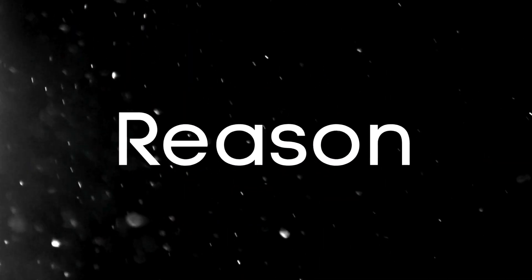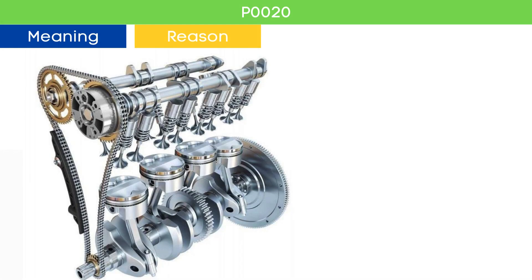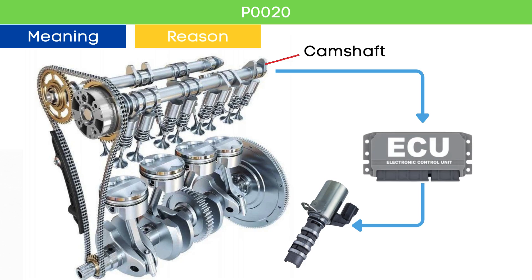Now let's learn why P0020 was triggered. The camshaft position sensor measures the position of the camshaft and sends this signal to the ECU. The ECU then sends a pulse command to the variable valve timing, or VVT, solenoid to advance or delay the cam position based on engine load and speed. The VVT solenoid adjusts the cam phaser accordingly.